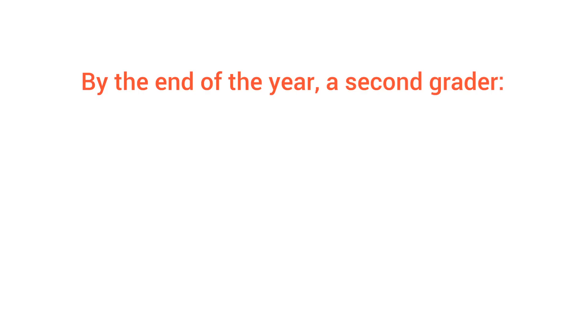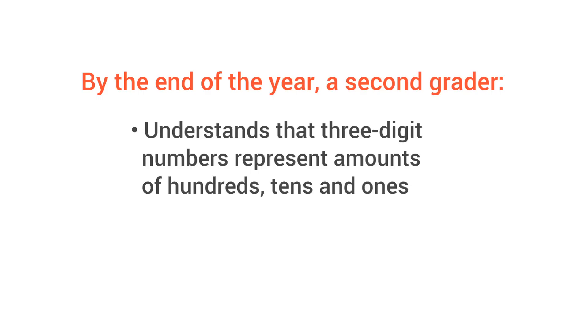So how do you know your child is on track? By the end of the year, a second grader understands that three-digit numbers represent amounts of hundreds, tens, and ones.